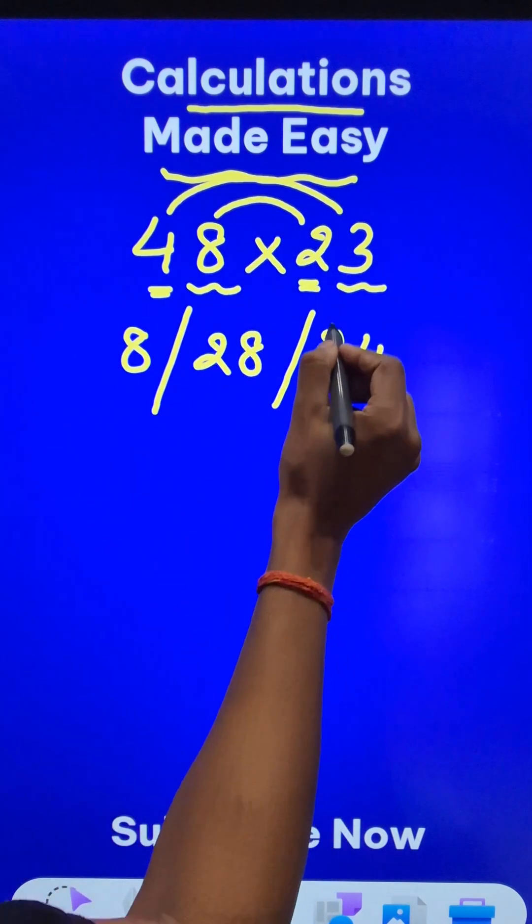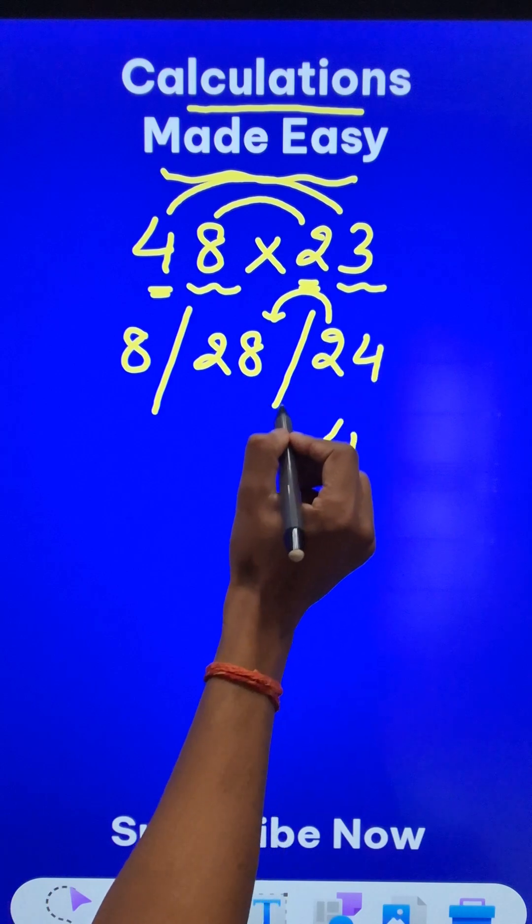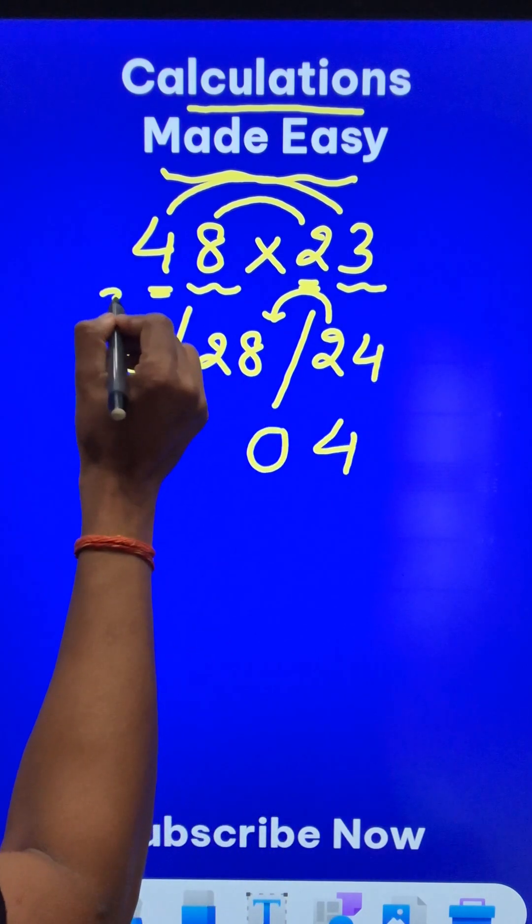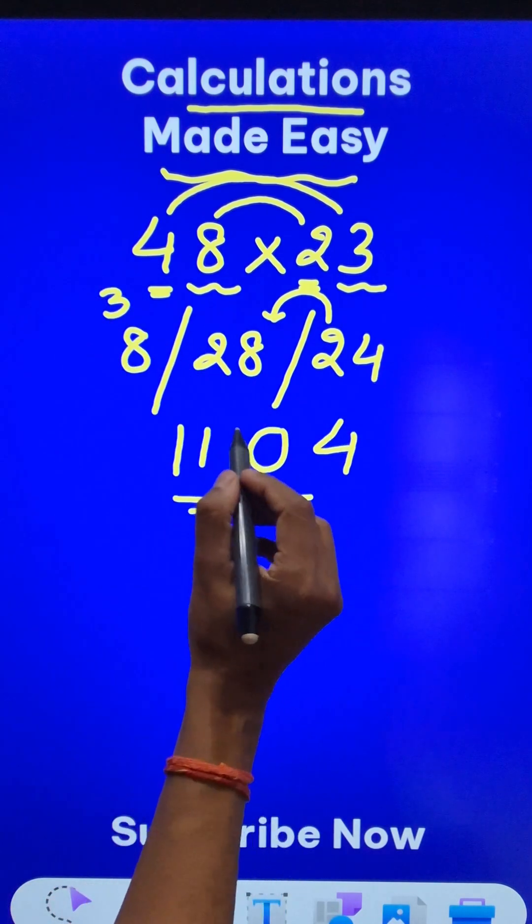Now, retain the 4, carry forward the 2, 28 plus 2 is 30, so 0. Carry forward the 3, 3 plus 8 is 11 and there you have the product.